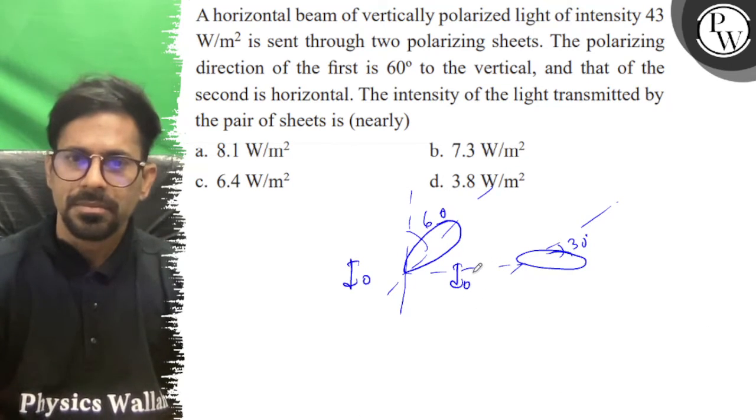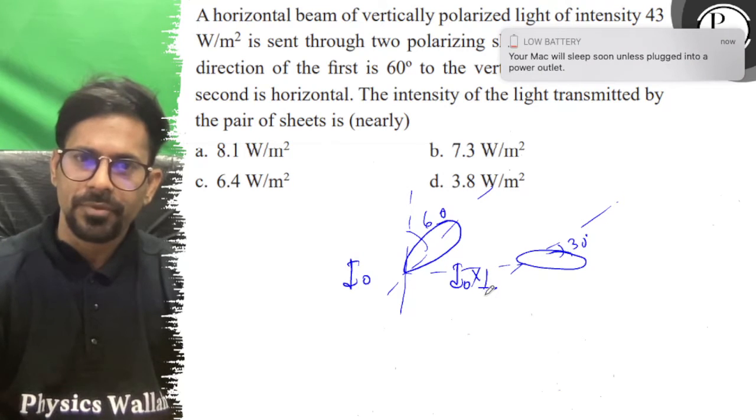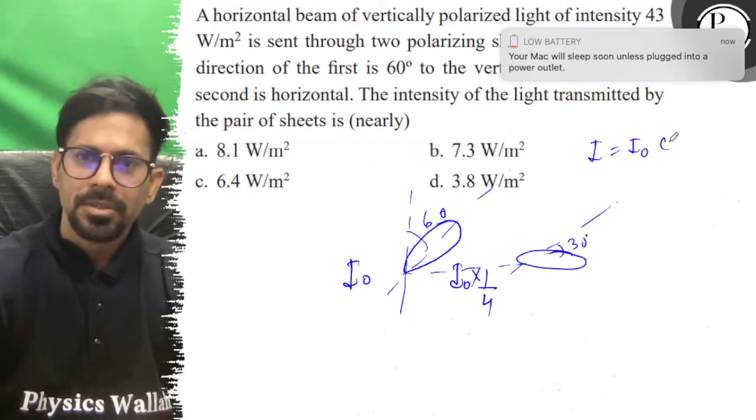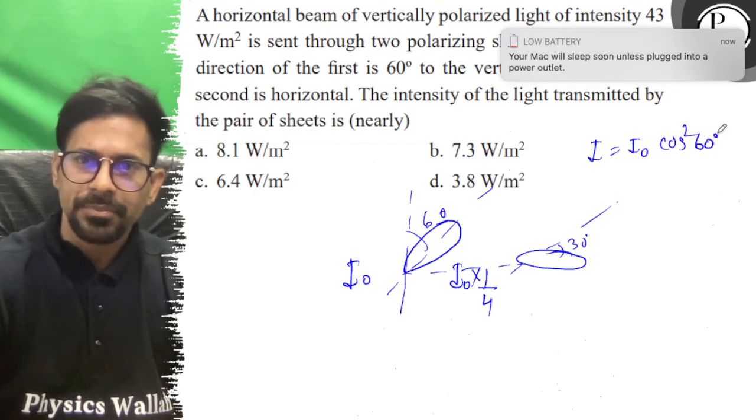After the first polarizer, I equals I₀ cos² 60°, which means I equals I₀/4.